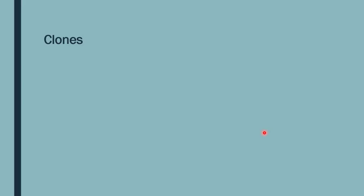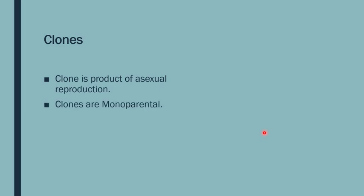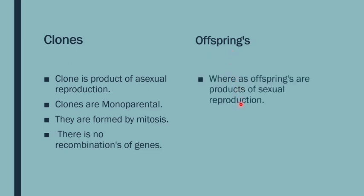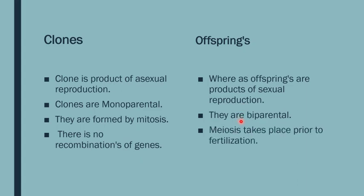A clone is always a product of asexual reproduction. Clones are monoparental and are formed by mitosis. There is no recombination of genes. Whereas offspring are products of sexual reproduction. Offspring are biparental. Meiosis takes place prior to fertilization, and after fertilization, mitosis will occur. It involves recombination of genes.